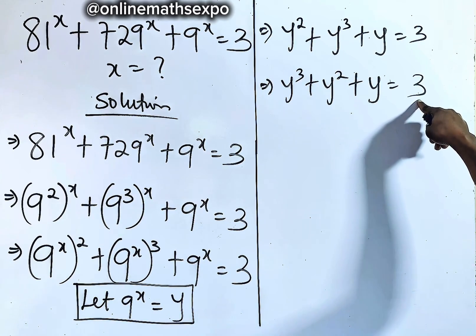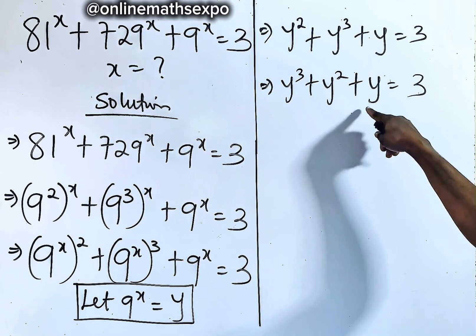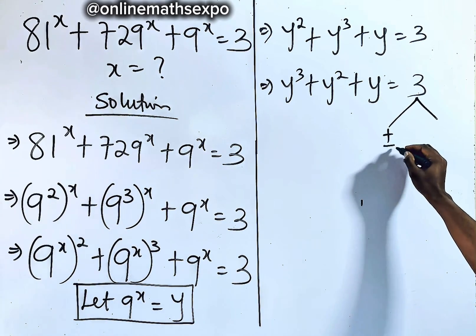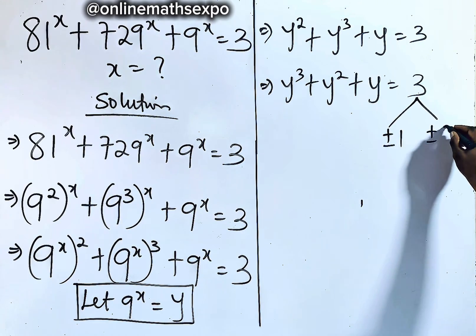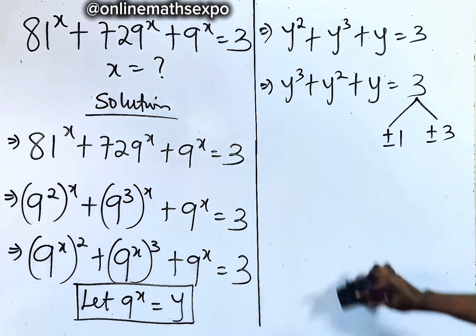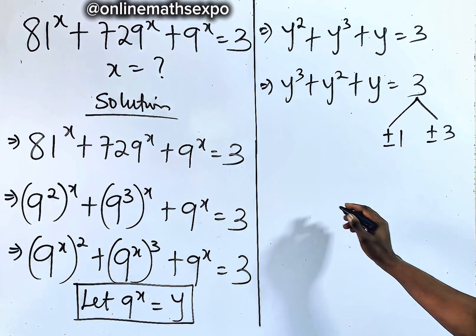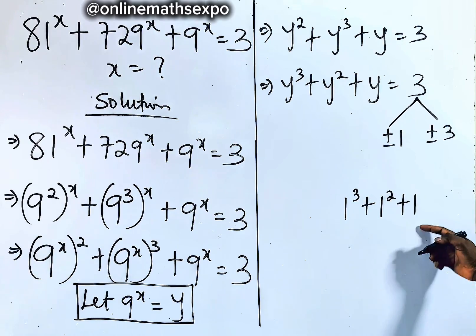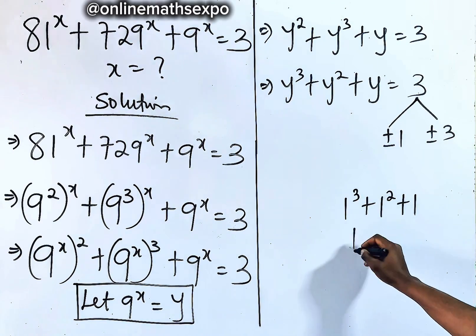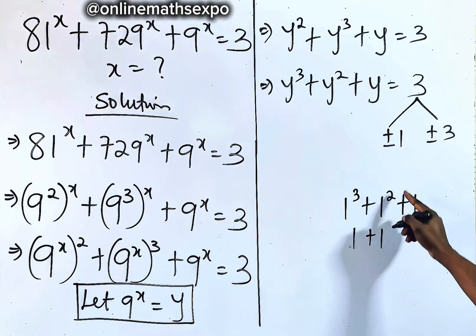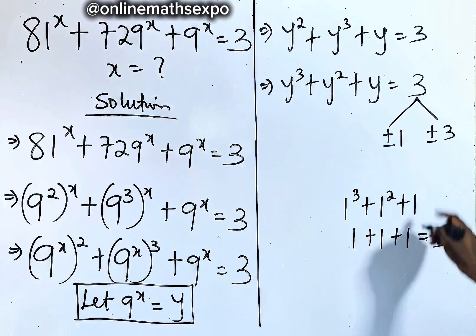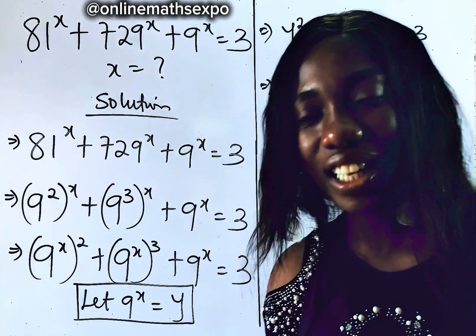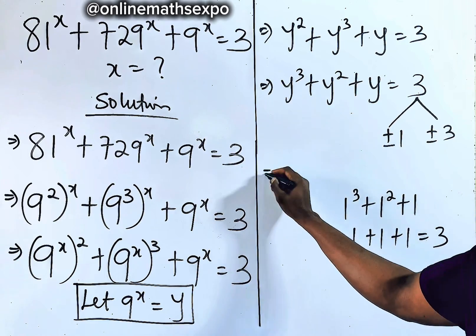Let's use trial and error with this 3. The factors of 3 are positive and negative 1, and positive and negative 3. Trying the first factor, positive 1: we have 1 cubed plus 1 squared plus 1. Does it give us 3? 1 cubed is 1, plus 1, plus 1 equals 3. Yes! So y = 1 is one of the solutions, and that will help us to solve.